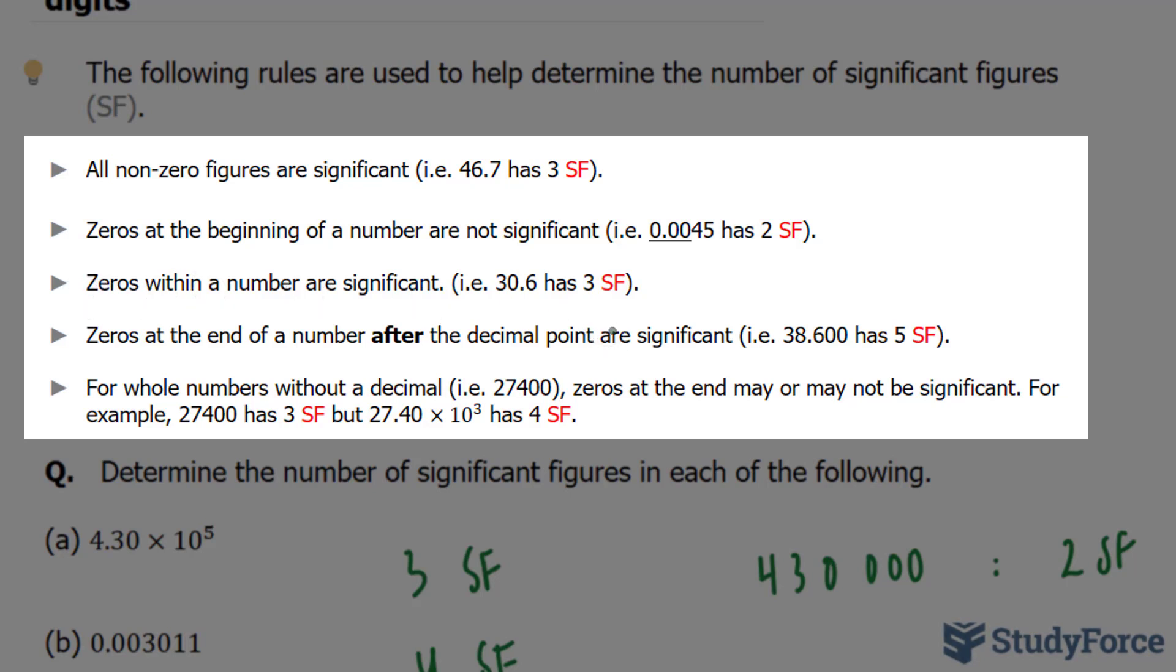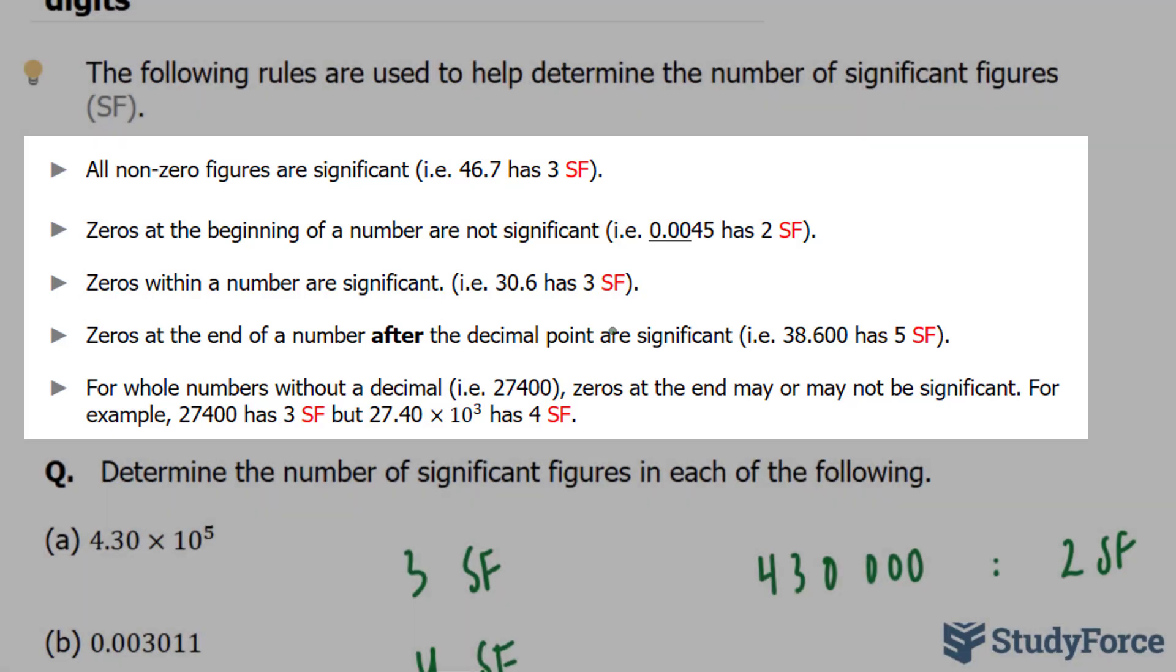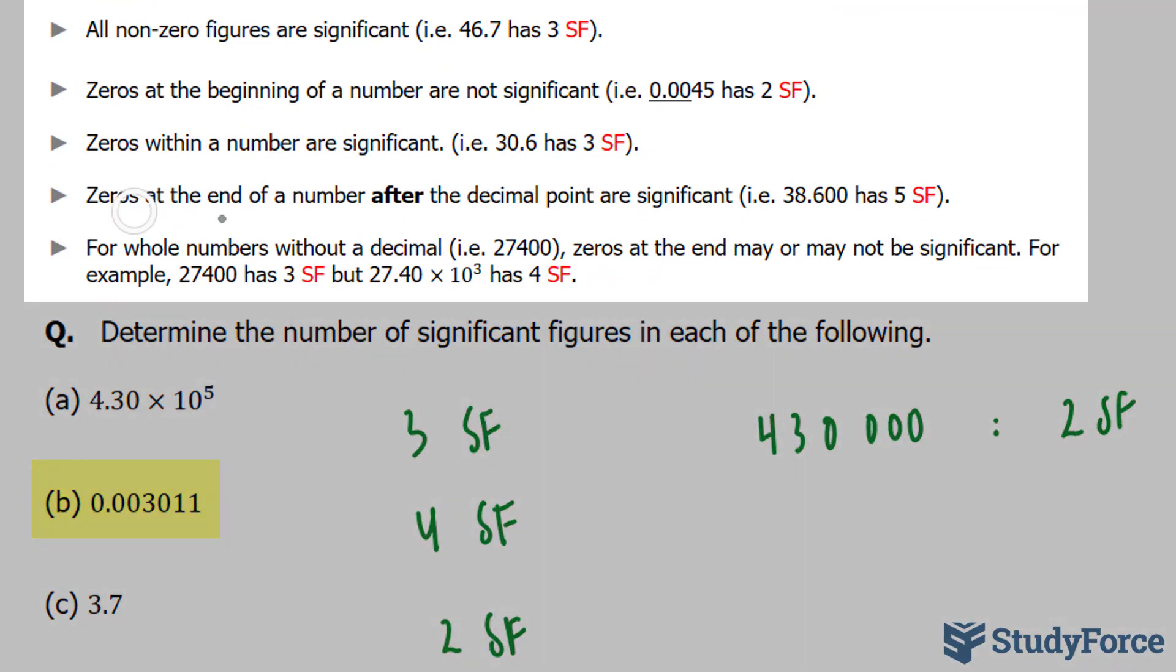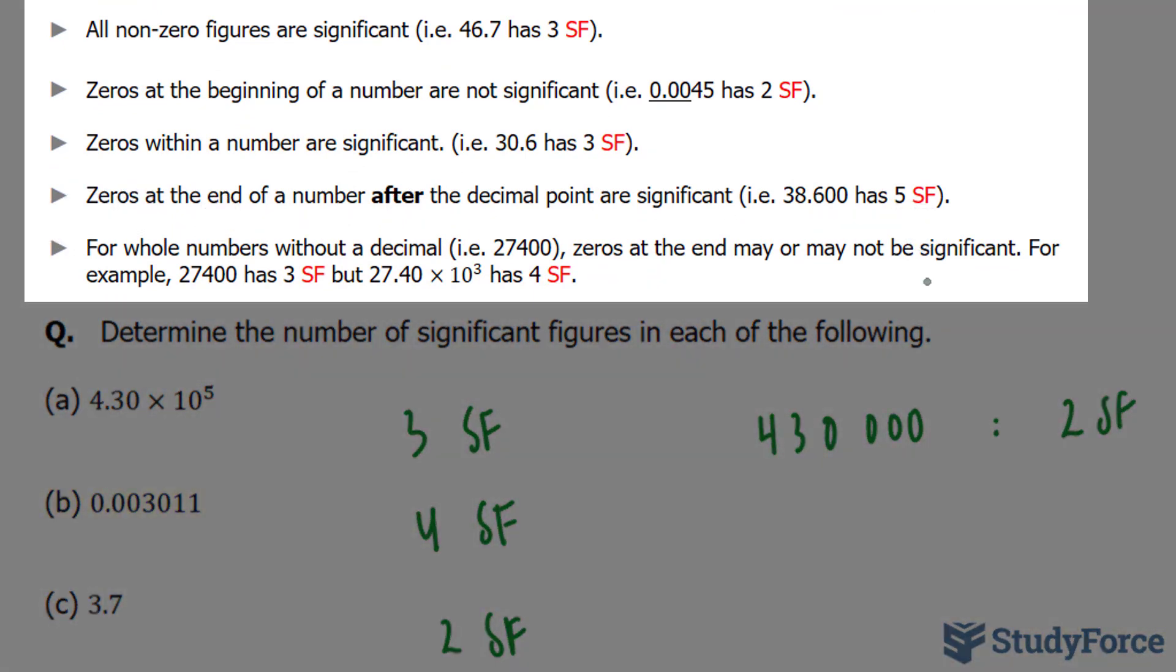Furthermore, this next rule, zeros within a number are significant, as shown in example B. And in the next rule, zeros at the end of the number, after the decimal point, are also significant. So in this case right here, we have 38.600 which has 5 significant figures.